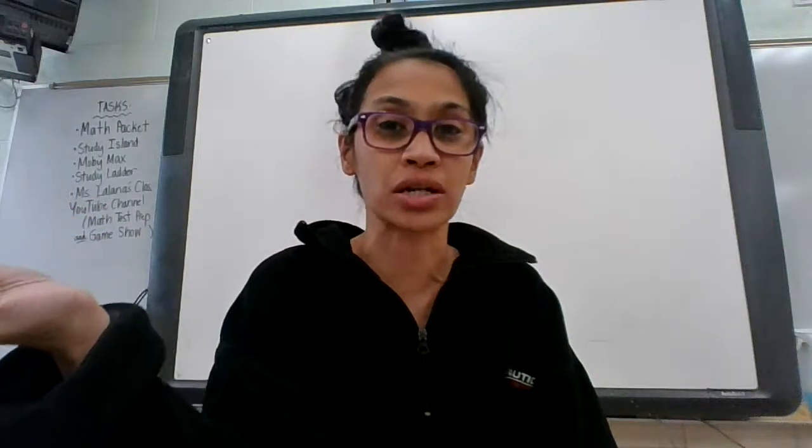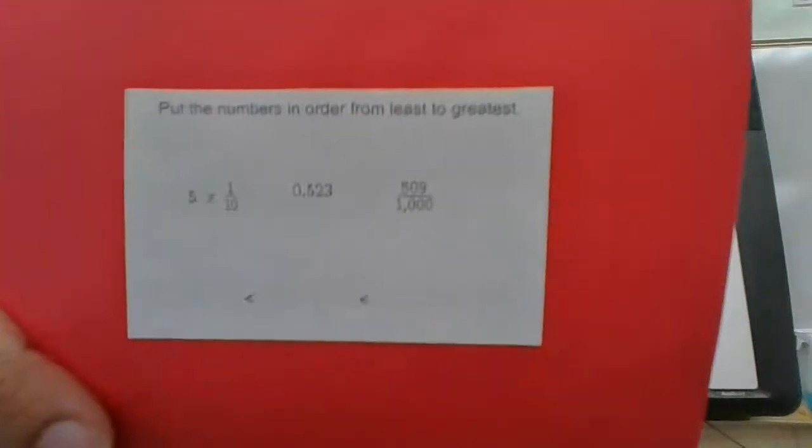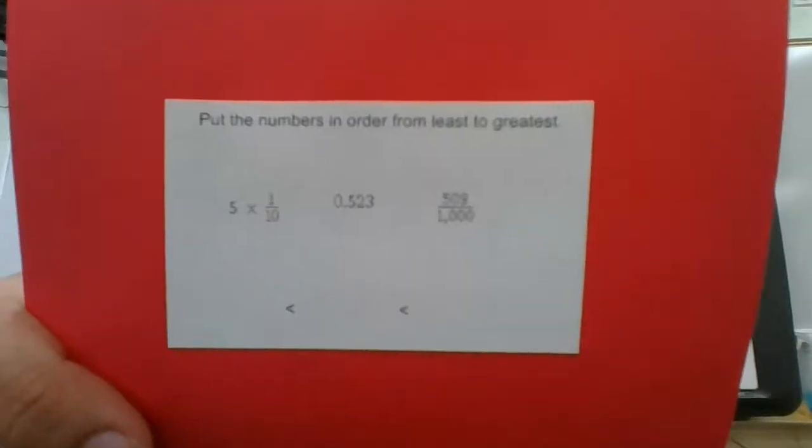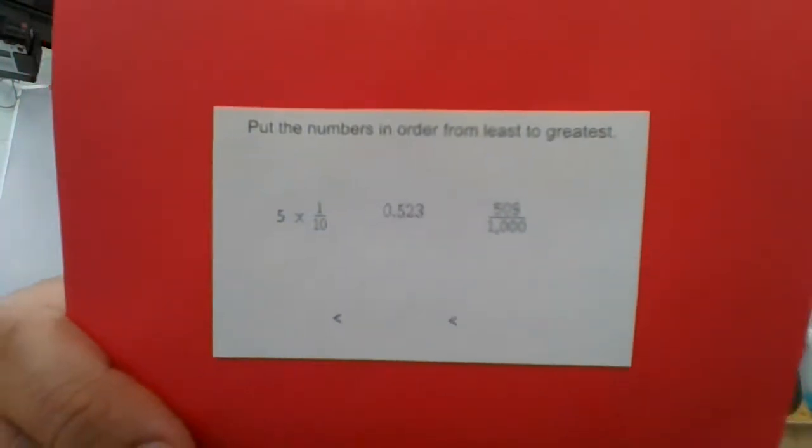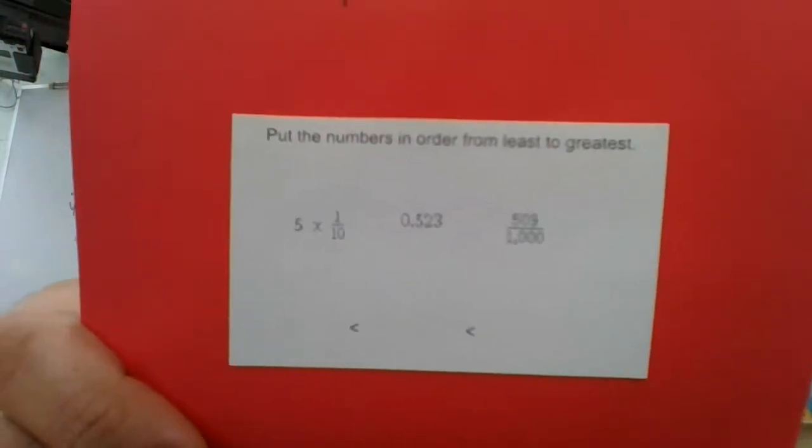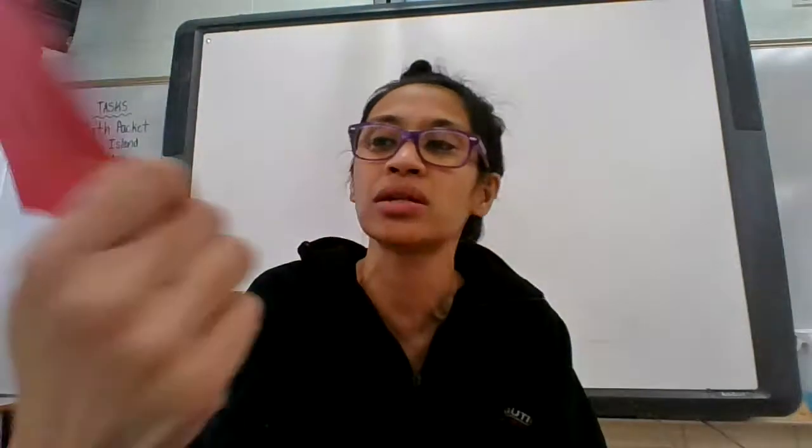Now, to put these numbers in order, we need to do something first. What do you notice about the numbers? Okay, so they all have a 5 in it. They all have a 0 in it.